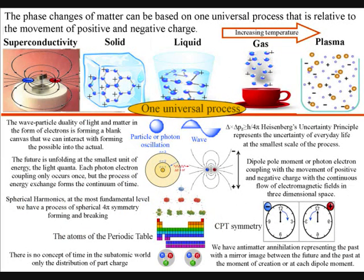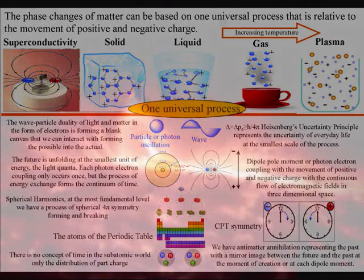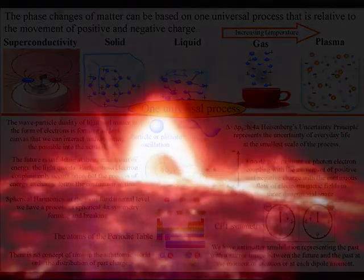At high temperatures, we have a phase change in matter, with the same process unfolding, at a much larger scale, in the form of plasma.